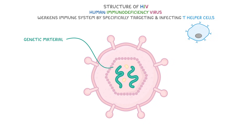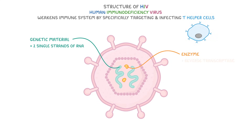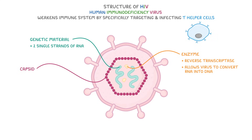Firstly, its genetic material is made of two single strands of RNA that carry the virus's genetic instructions. HIV also contains an enzyme called reverse transcriptase. This is important because it allows the virus to convert its RNA into DNA once it's inside a host cell, which is really important when it comes to viral replication. The genetic material and enzymes are all surrounded by a capsid, which is a protein shell that protects the RNA and enzymes as HIV travels from cell to cell.